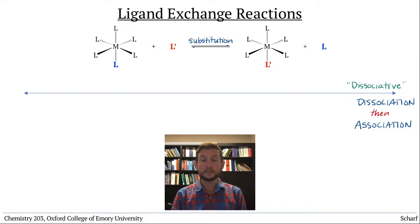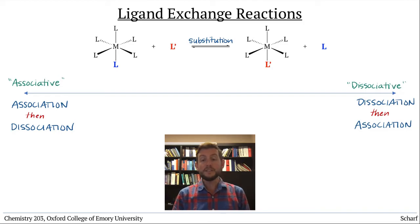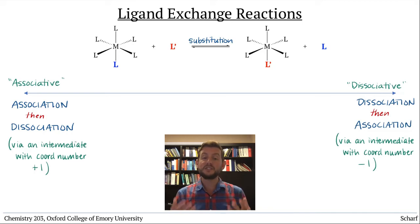At the other end of the spectrum, the incoming ligand can first associate, followed by a second step in which the outgoing ligand dissociates. This is associative ligand exchange. Both of these extreme cases are two-step processes with a discrete intermediate.